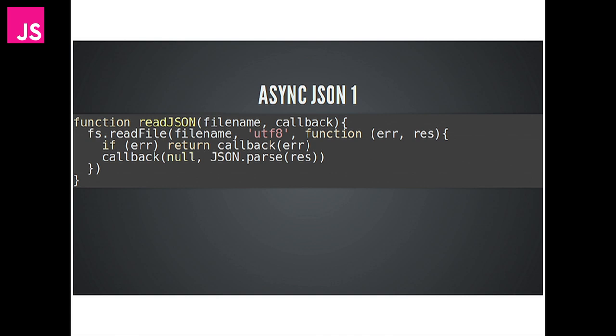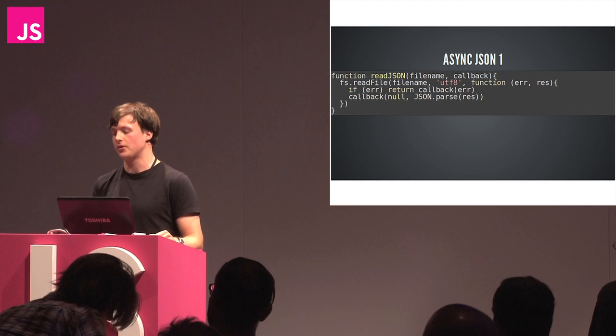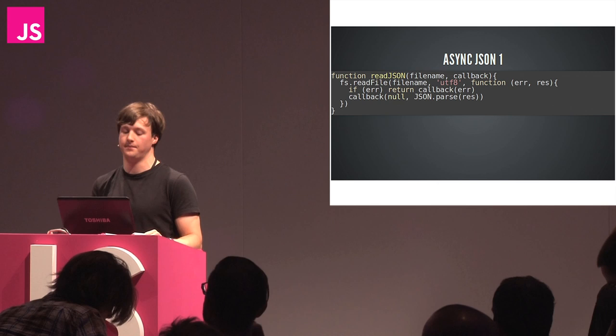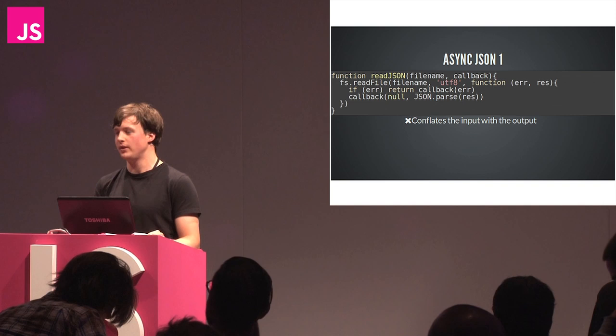If there's not an error, we call back with null as our error argument and the result as the second argument. This isn't a lot more complicated than the first function we wrote, but I want to show you that this isn't sufficient. This code is a long way off a complete implementation of readJSON. This is conflating the input with the output - it might not seem important, but it turns out to have lots of effects down the line.